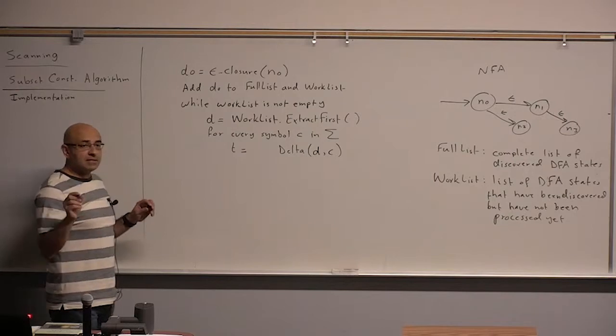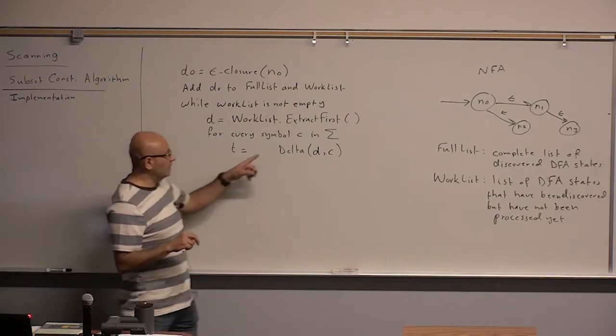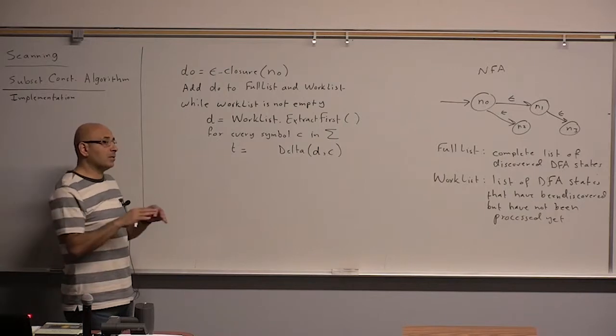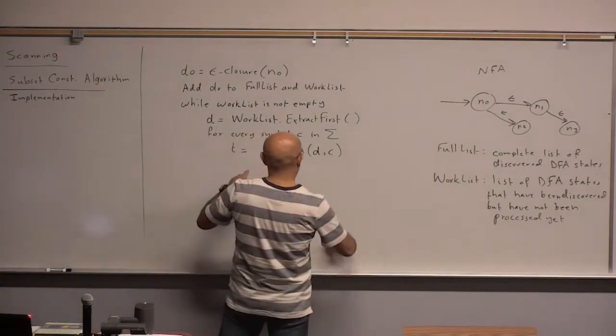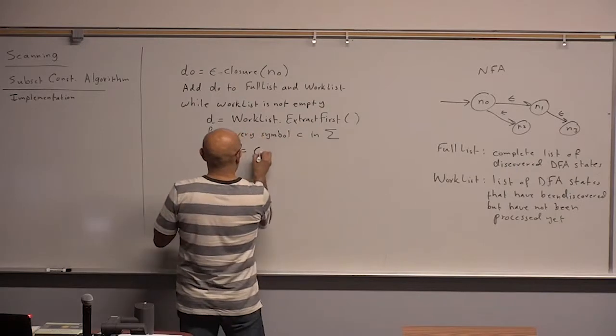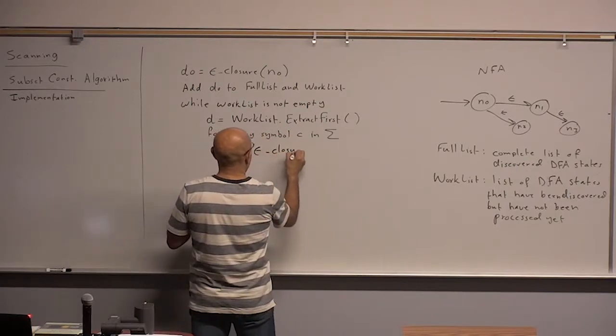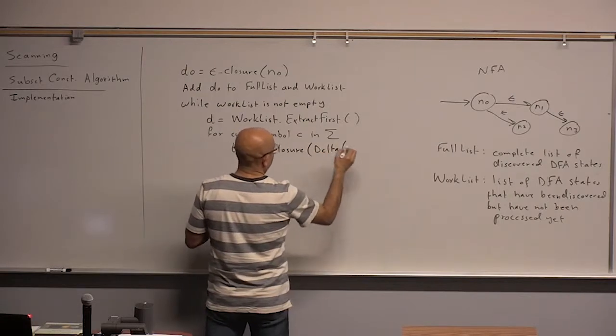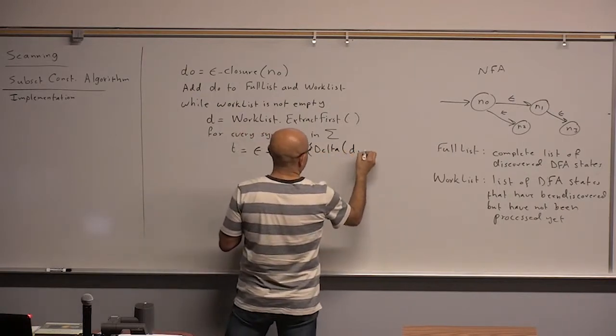But in fact, in this algorithm, we don't just look at the delta, we look at the epsilon closure of that delta. We always look at the epsilon closure. So in fact, this is not going to fit, so epsilon closure of delta of D and C.